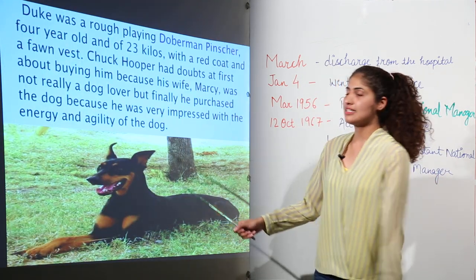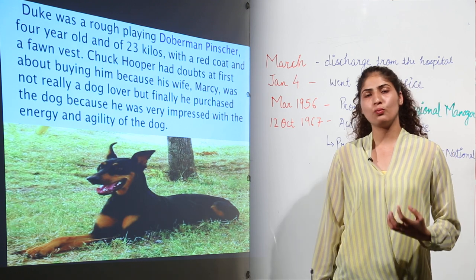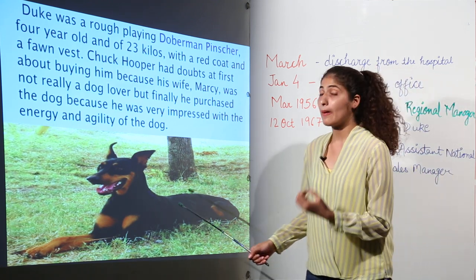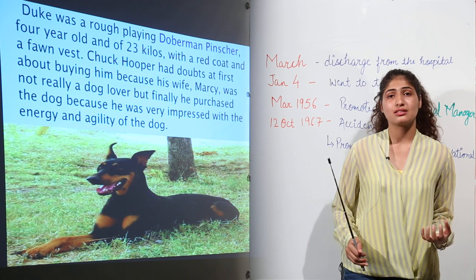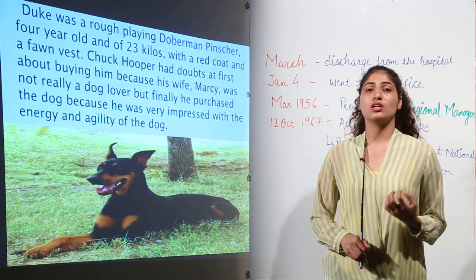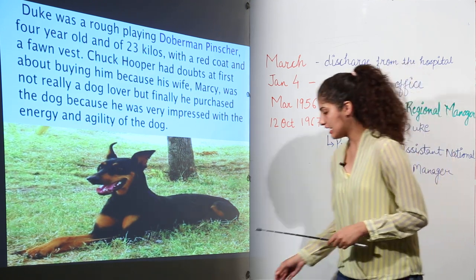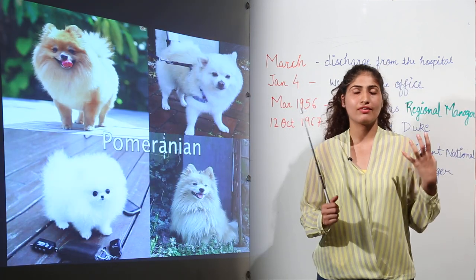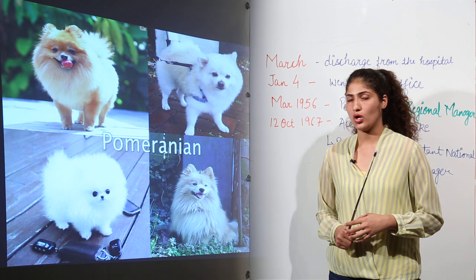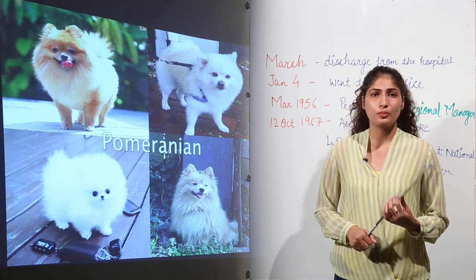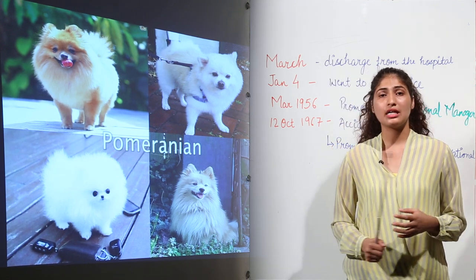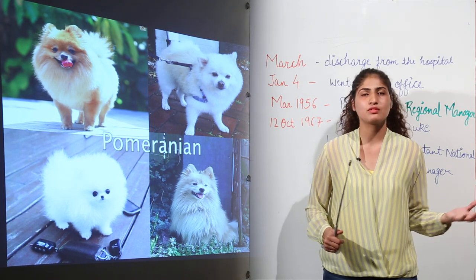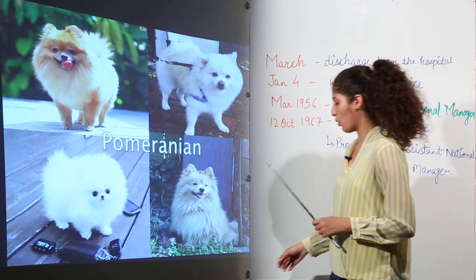Basically, Duke is a dog which Charles Hooper wanted to buy. He liked this dog, but he knew that his wife is not a dog lover. She believed that a Pomeranian is the right size dog for a small plot. So Chuck went to the kennel many times before he made up his mind to buy that dog.